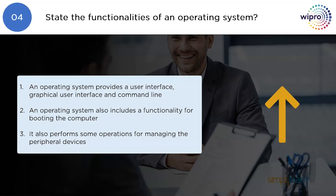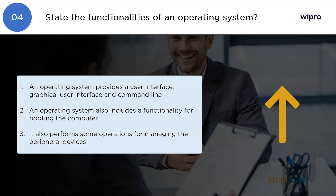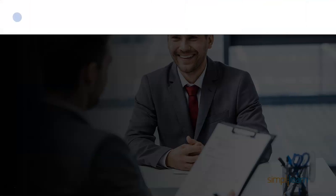State the functionalities of an operating system. An operating system provides a user interface — both a graphical user interface and a command line. It also includes functionality for booting the computer and performs operations for managing peripheral devices.